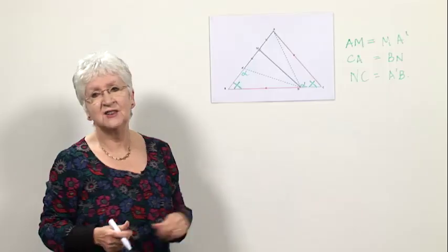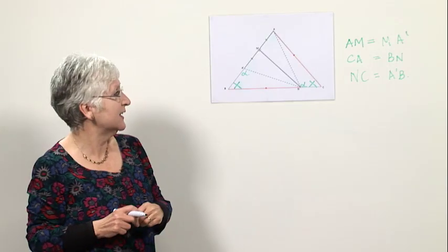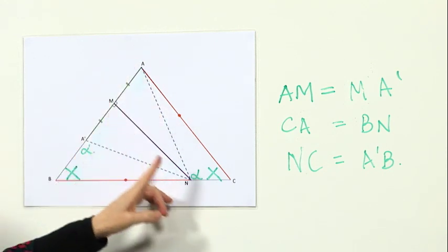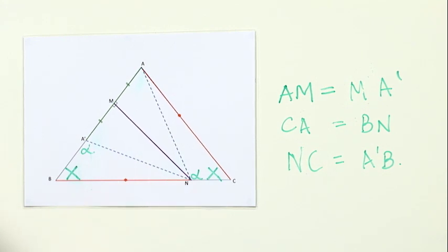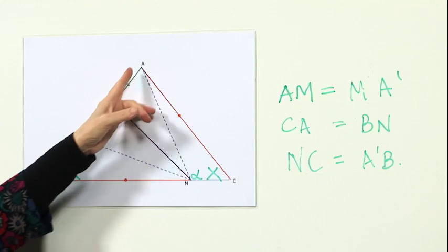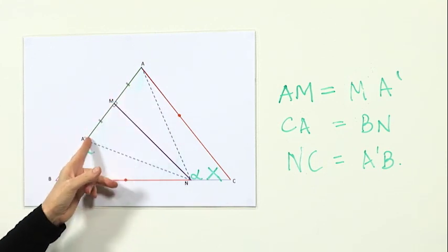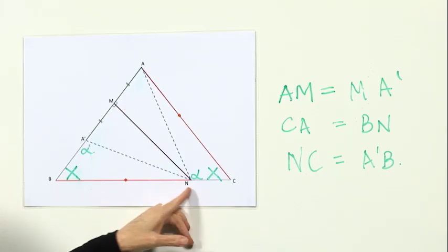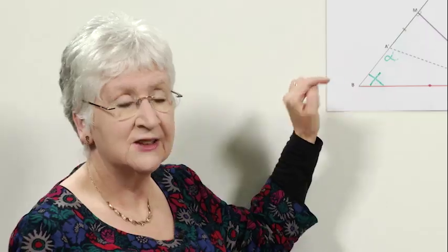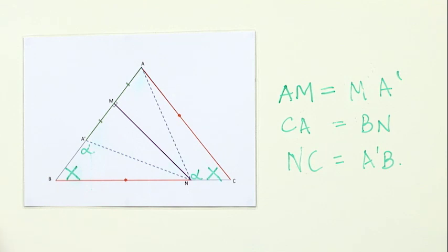On either side of MN, we have two pairs of congruent triangles. We have the triangle AMN congruent to the triangle MA dashed N, and the triangle CAN congruent to the triangle BNA dashed. This means that AM is the same length as MA dashed, CA is the same length as BN, and NC is the same length as A dashed B. And so, MN has divided the length of the original triangle into two equal parts.